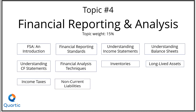Non-current or long-term liabilities is the next reading, and this covers bonds, leases, and pensions. In terms of bonds, look at the accounting treatment for bonds issued at a premium, discount, and at par. In terms of leases, look at the differences between an operating lease and a finance lease under both US GAAP and IFRS. When it comes to pensions, don't delve into too much detail — just know the very basics of pension accounting and the differences between defined contribution and defined benefit pension plans.